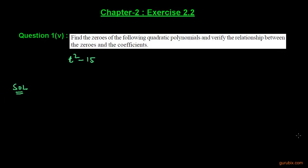Welcome friends. Here is the fifth part of question number one of exercise 2.2 of chapter 2. The question says: find the zeros of the following quadratic polynomials and verify the relationship between the zeros and the coefficients.